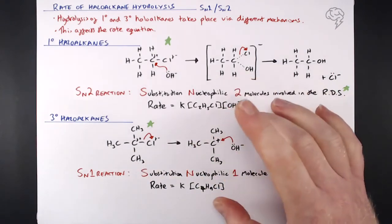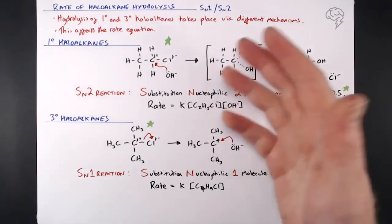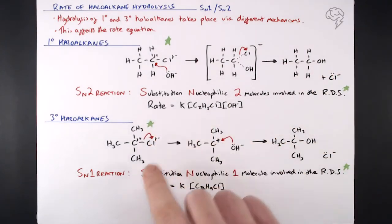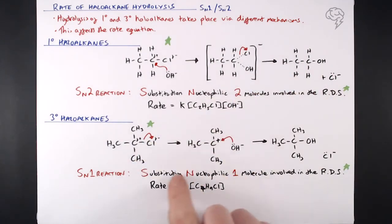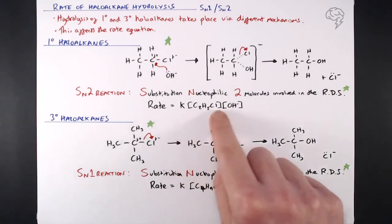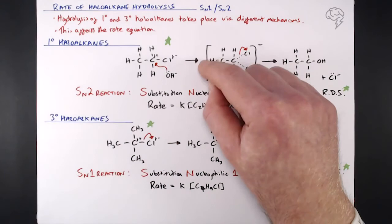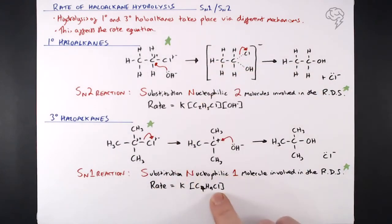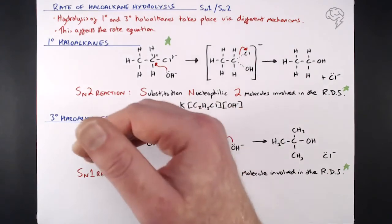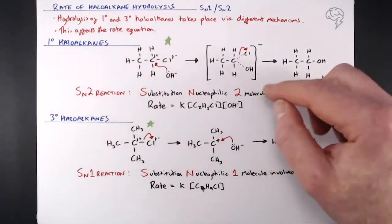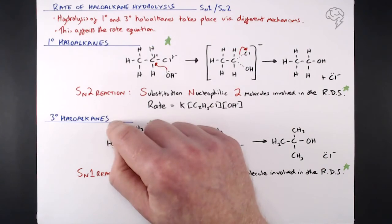In terms of exam questions, they might give you the rate equation for hydrolysis of a halo alkane and ask whether it's SN1 or SN2. If the rate equation is just rate = k × [halo alkane], that's SN1 — and it's likely a tertiary halo alkane. If the rate equation includes both the halo alkane and the hydroxide ion, that's SN2 — and it's likely a primary halo alkane. So the rate equation can tell us whether the halo alkane is primary or tertiary.